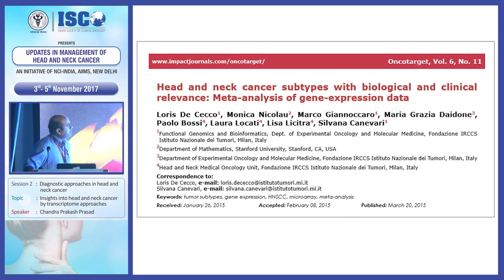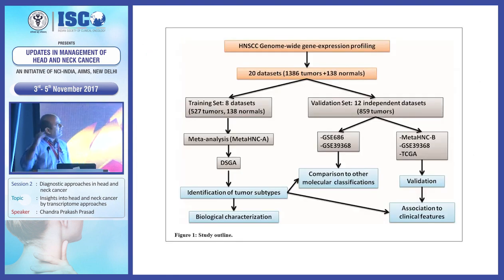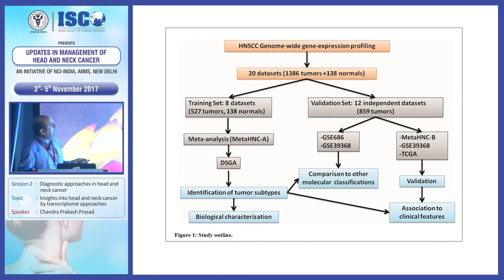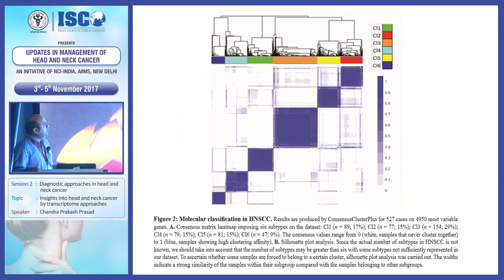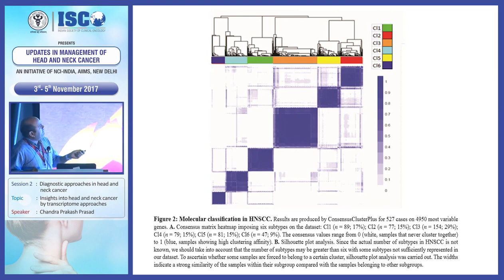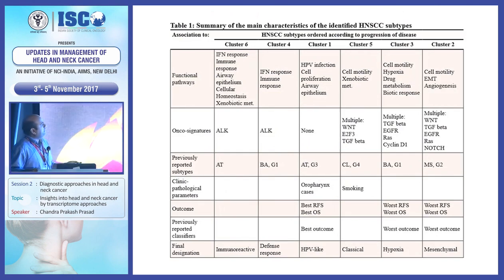This first study involves a meta-analysis of gene expression data, where the authors classified head and neck cancer subtypes with biological and clinical references. They carried out gene expression profiling for 20 datasets available — 8 in the training set and 12 independent datasets in the validation set. They found six clusters of differentially expressed genes, classified as cluster 1 through cluster 6, and then gave each a final designation: cluster 2 was mesenchymal, cluster 3 was hypoxia, cluster 5 was classical, and so on.